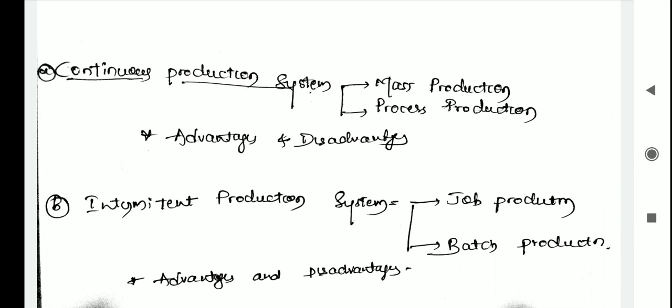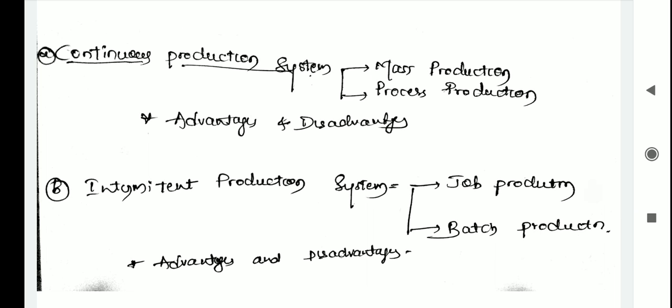Coming to process production: continuous production takes place in this type also, but the raw material goes through a few major processes maintained as separate departments. This is in contrast to flow production system, where the raw material goes through a sequence of operations in quick succession. In the process of production, the finished product of one process is used in the next process as raw material till the last process.